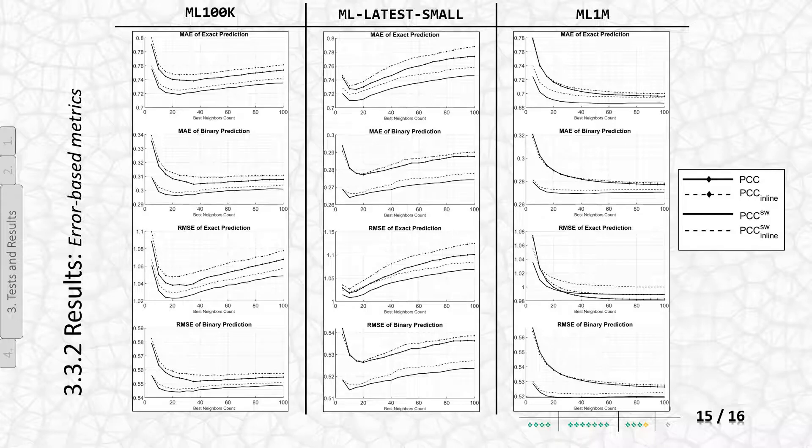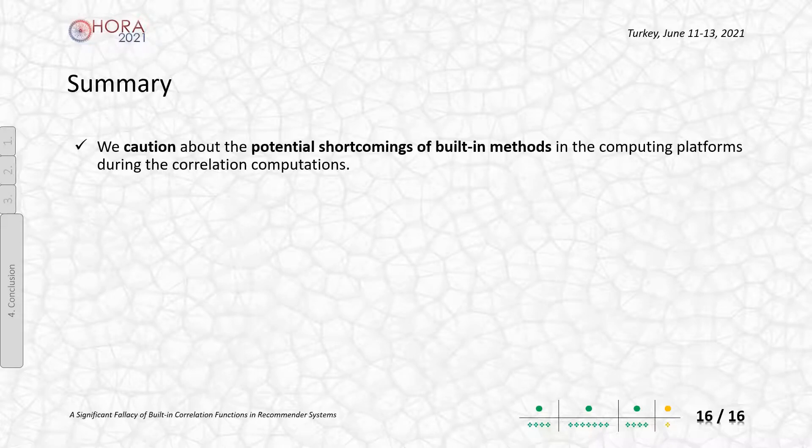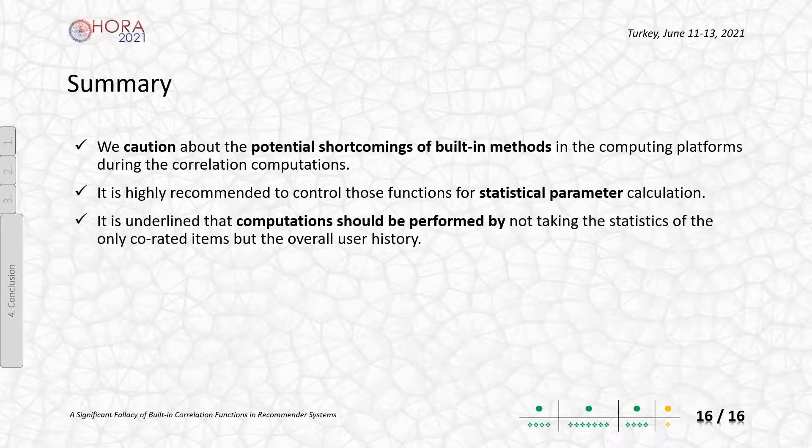The results confirm that this simple fallacy has considerable implications, and we warningly say that the default built-in function may not work as you expected. As a summary, during correlation calculations, we warn researchers about possible shortcomings of built-in methods. We recommend checking those functions for inside operations. With the aid of different datasets and performance metrics, experimental monitoring underlines the importance of not taking the default built-in methods.